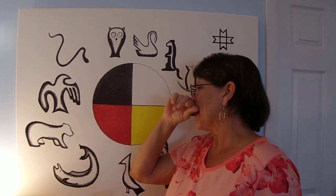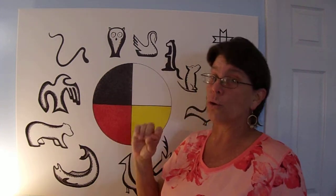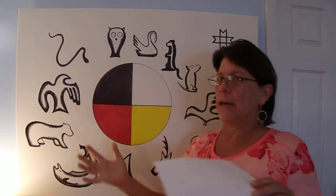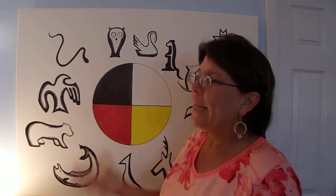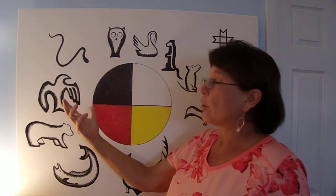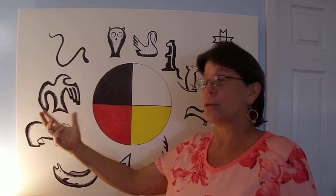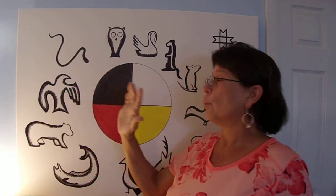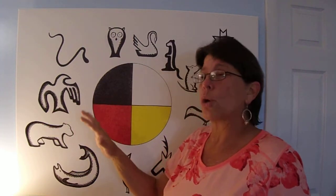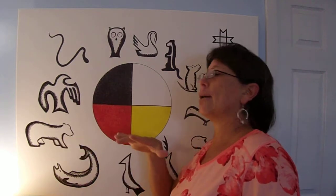They're traditionally thought to bring game or to keep game away. So there was a balancing there of being pleasing to the totem, yet being wary that there can be an out of balance situation with the crow. And that's kind of one of the unique things about the crow is that it's best to maintain a balance there.